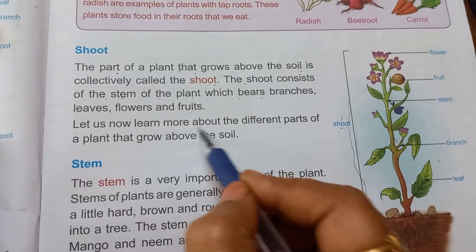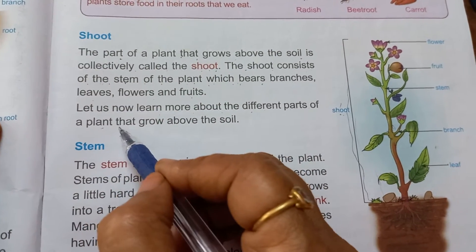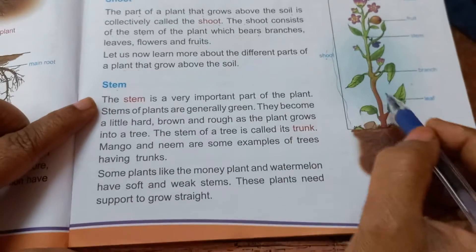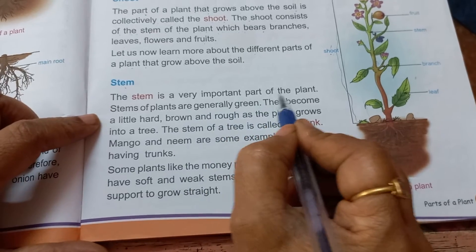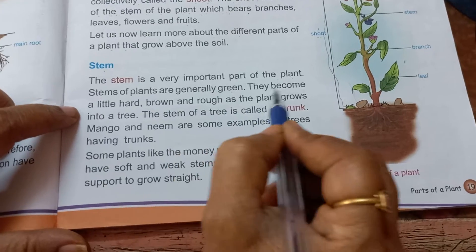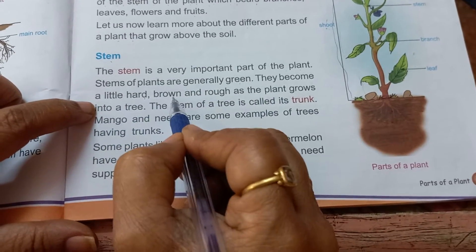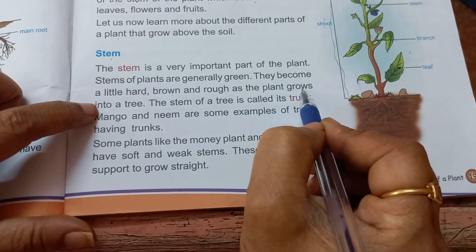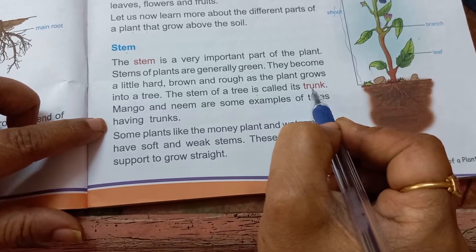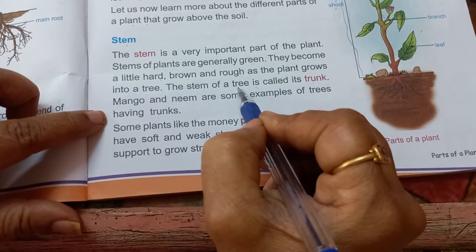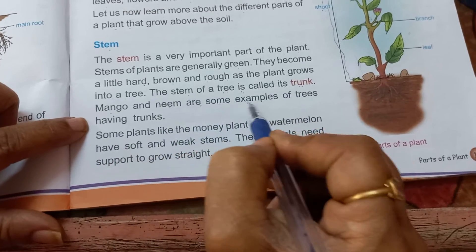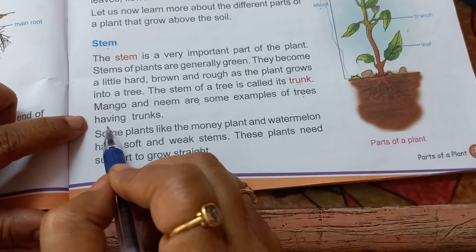Let us now learn more about the different parts of a plant that grow above the soil. The stem is a very important part of the plant. Stems are generally green, but they become a little hard, brown, and rough as the plant grows into a tree. The stem of a tree is called a trunk — it is big and thick. Mango and neem are some examples of trees having trunks.